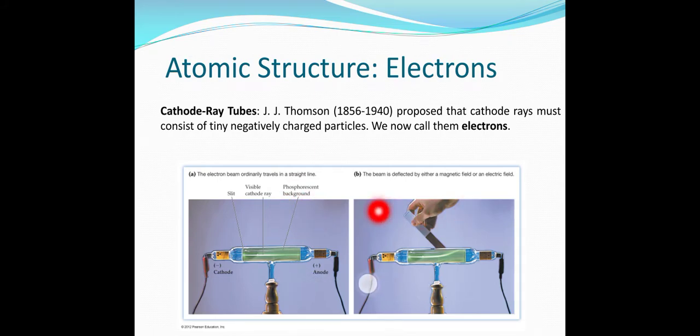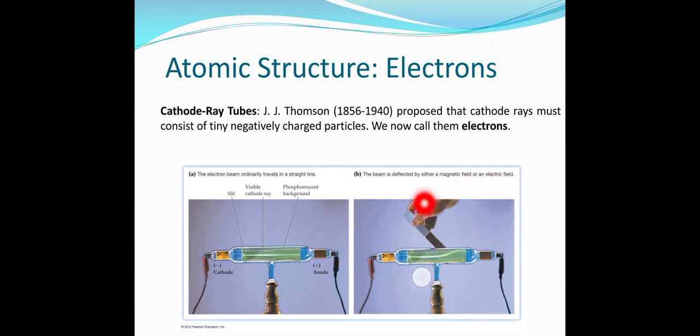When a magnetic field is applied to the cathode ray tube experiment, the beam is deflected. Since electrons are negatively charged, they are attracted to the positive charge in the electric or magnetic field, causing the deflection.